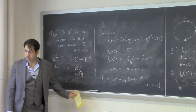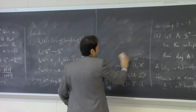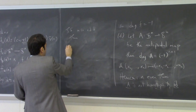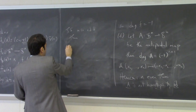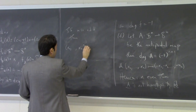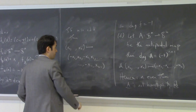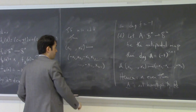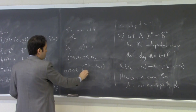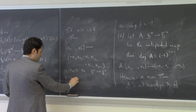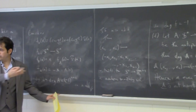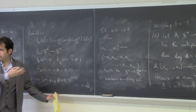Does the converse hold? If n is odd, can we find a non-vanishing vector field? Yes — we can write it down explicitly. If n is odd, the map (x_0, x_1,..., x_{n-1}, x_n) ↦ (-x_1, x_0,..., -x_n, x_{n-1}) restricts to S^n and is never vanishing.